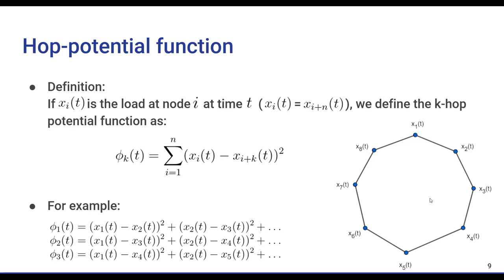So, for example, Phi1 at time t will be (x1(t) - x2(t))^2 + (x2(t) - x3(t))^2 and so on. And Phi2 at time t will be (x1(t) - x3(t))^2 + (x2(t) - x4(t))^2 and so on.